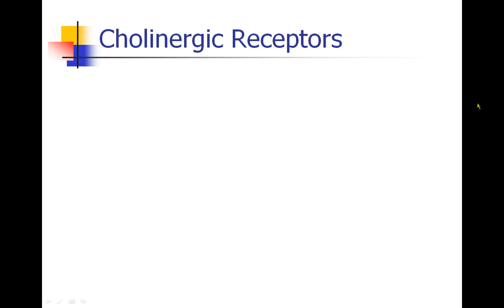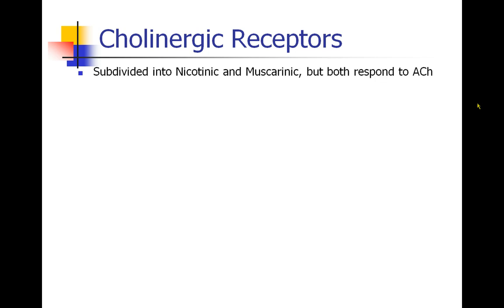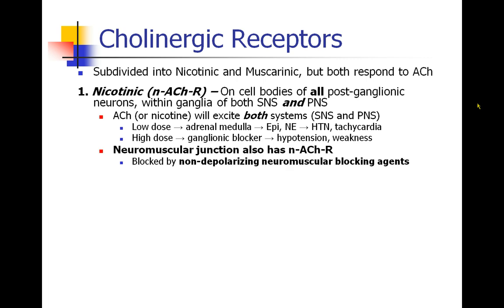We're going to go back to the cholinergic system and focus on receptors. Acetylcholine is the neurotransmitter of the cholinergic system. Acetylcholine receptors come in two kinds: the nicotinic and the muscarinic receptors. The nicotinic receptor can be found on the cell bodies of all postganglionic neurons, which are in the ganglia of both the sympathetic and parasympathetic systems. Acetylcholine can excite both systems because it excites every single ganglion. These are called nicotinic receptors because nicotine also excites them.